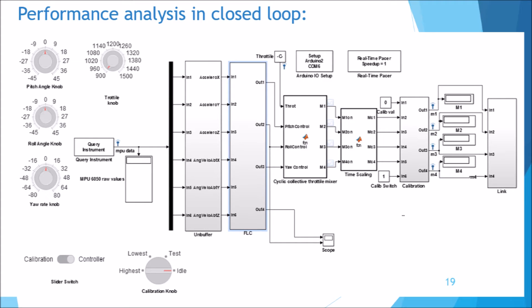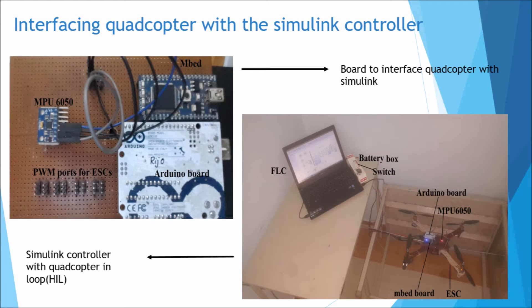The image shown on the left hand side is of the board that was used to interface the quadcopter model with the Simulink controller. MPU 6050 is linked with the Simulink controller via an embed board. The control signals were generated by the Arduino board. The right hand side image shows the quadcopter interfaced with the Simulink controller.